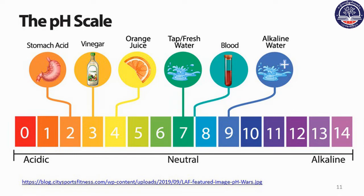pH 2 is stomach acid, pH 3 is vinegar, pH 4 is orange juice, and pH 7 is fresh water.